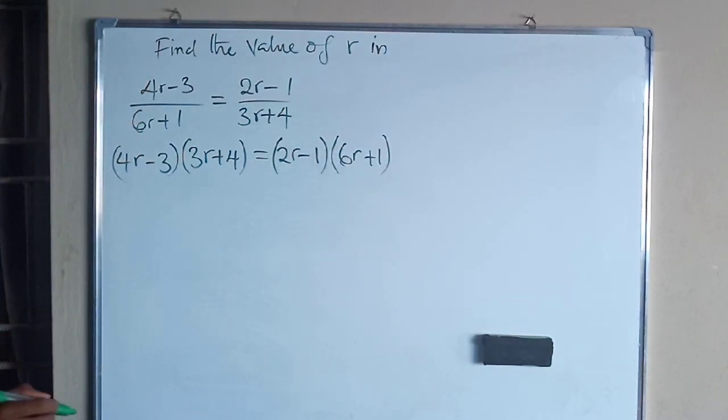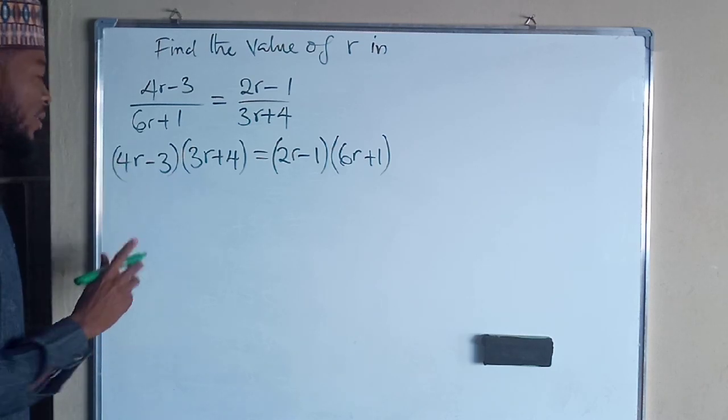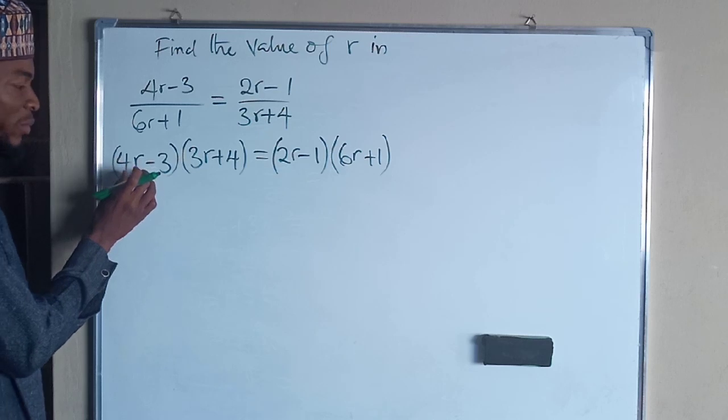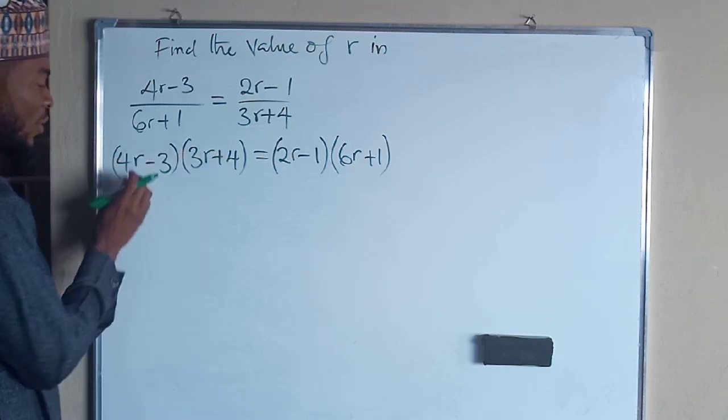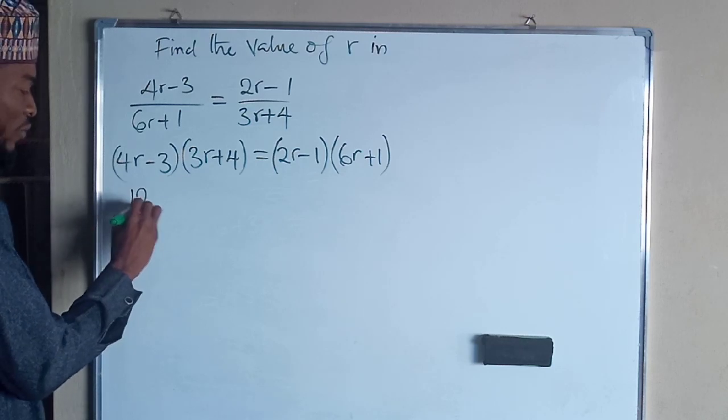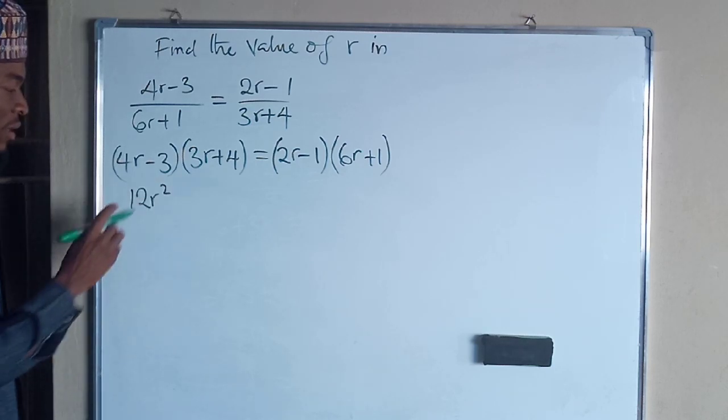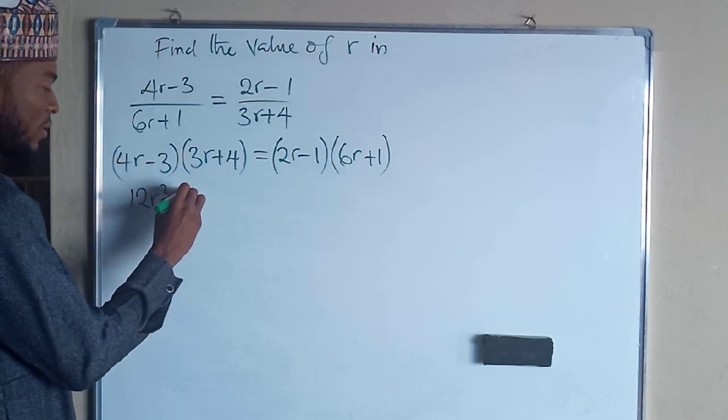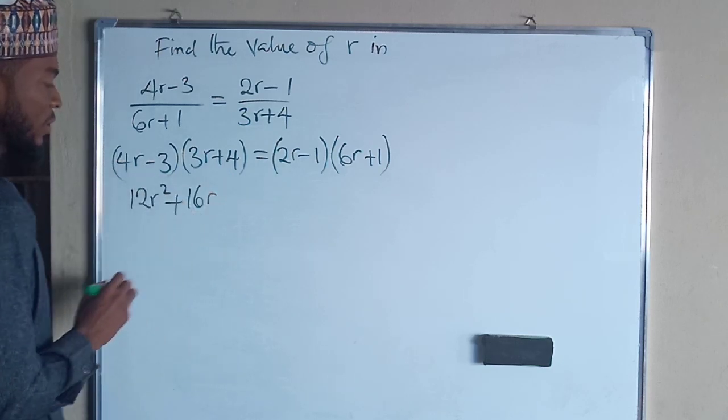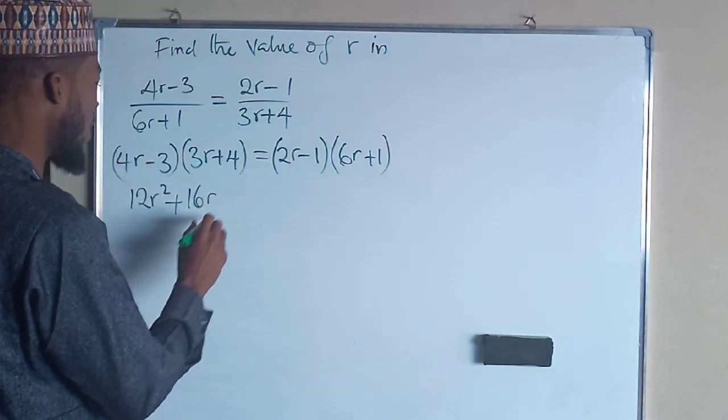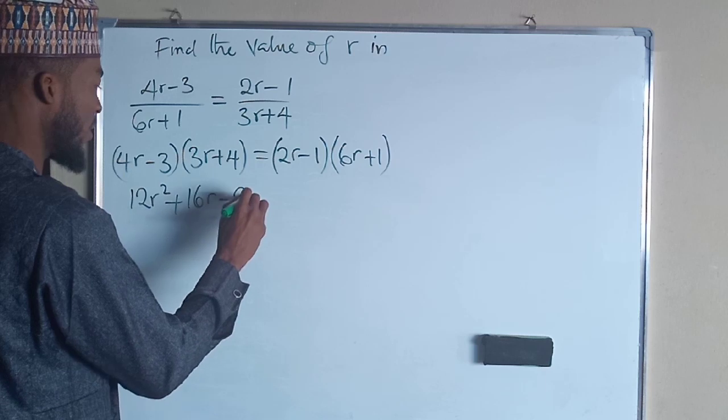We are looking for R, so our main target is on the R. We expand the brackets by multiplying the terms. 4R times 3R gives us 12R². 4R times 4 gives us 16R. Negative 3 times positive 3R gives us negative 9R.